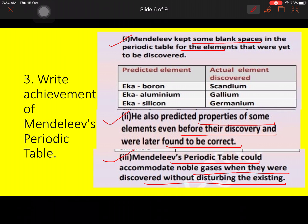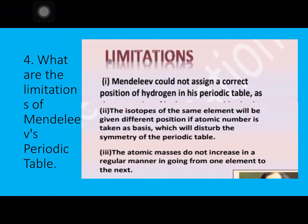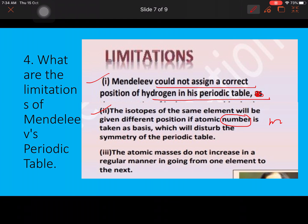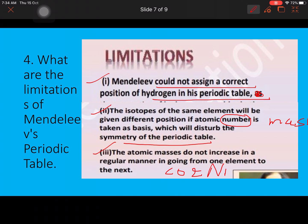The limitations of Mendeleev's periodic table are: first, Mendeleev could not assign a correct position to hydrogen. Second, the isotopes of the same element would be given different positions if atomic mass — remember, it's atomic mass, not atomic number — is taken as the basis, which would disturb the symmetry of the periodic table. Third, the atomic mass does not increase in a regular manner going from one element to the next, as in the case of cobalt and nickel — cobalt has been placed before nickel, while the atomic mass of nickel is lesser than that of cobalt.